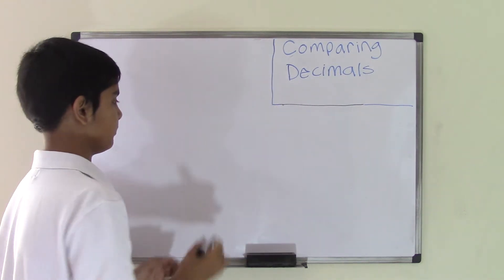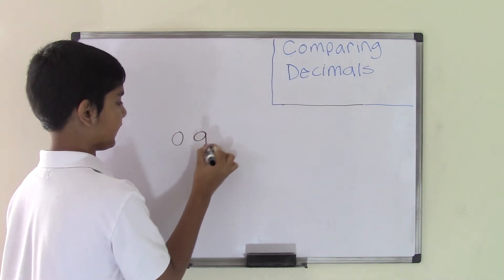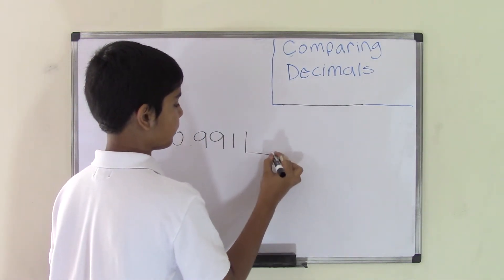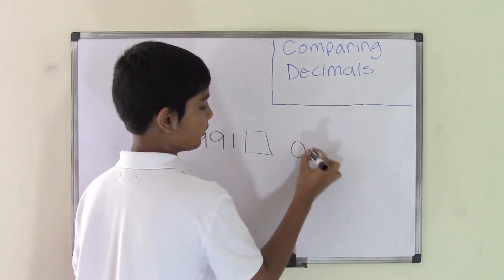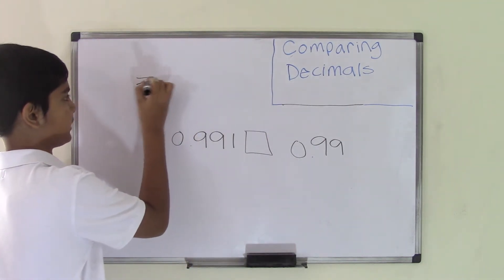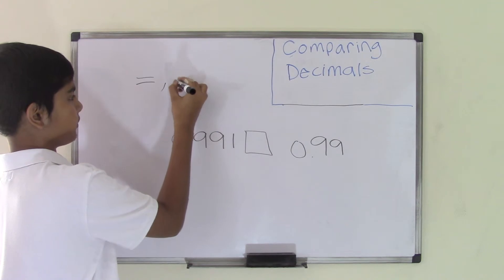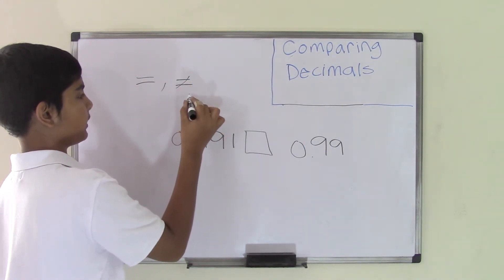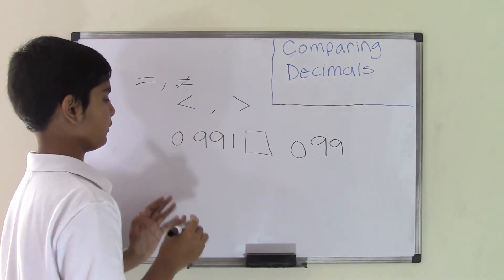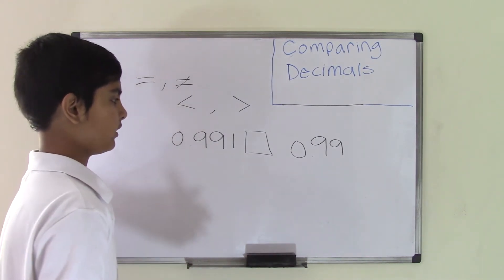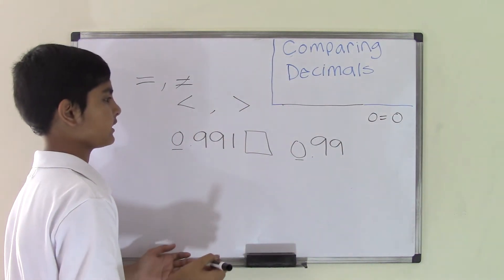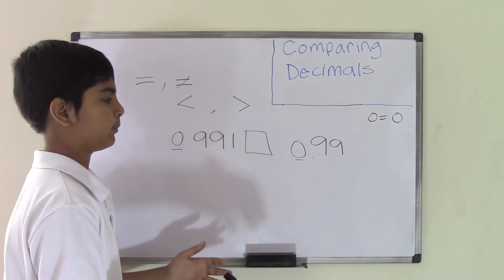Let's say we have the two decimal numbers 0.991 and 0.99, and we have to compare these. We know the comparison possibilities are either the numbers are equal to, or they're not equal to, and if they're not equal to, then either one number is less than the other or one is greater. To find that, we look at the first numbers: both are 0, and 0 equals 0, so we move on to the next thing, which is the decimal point — both include a decimal point.